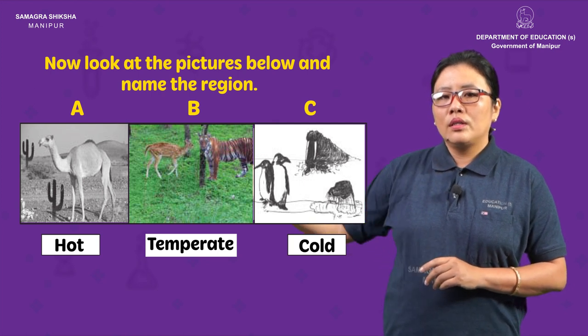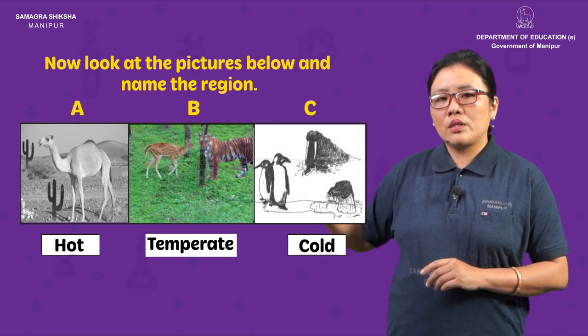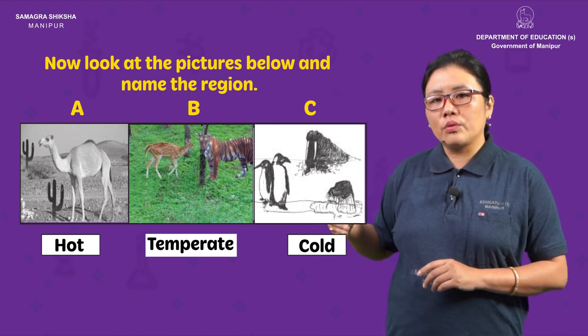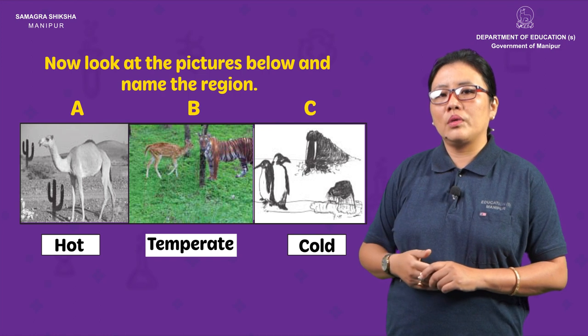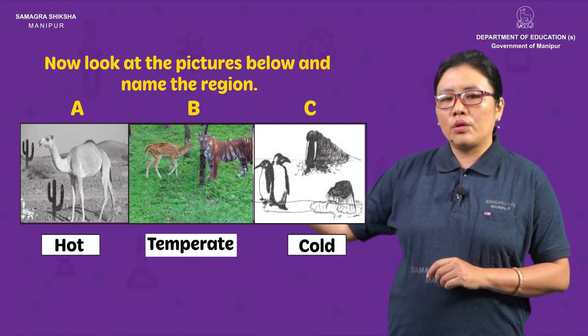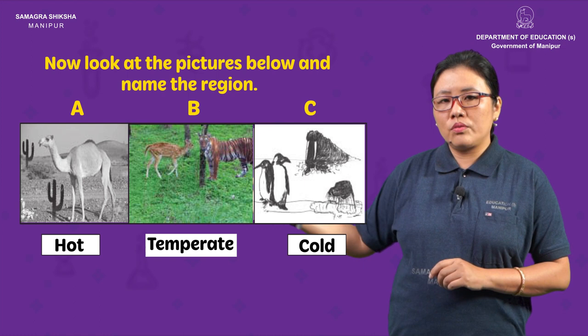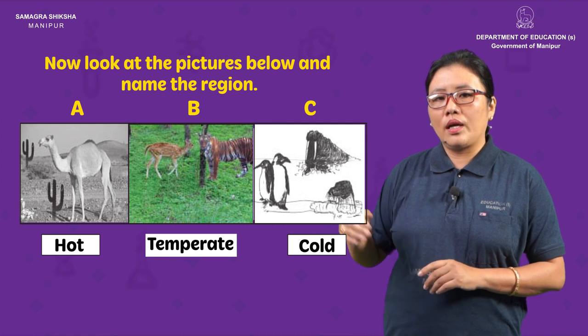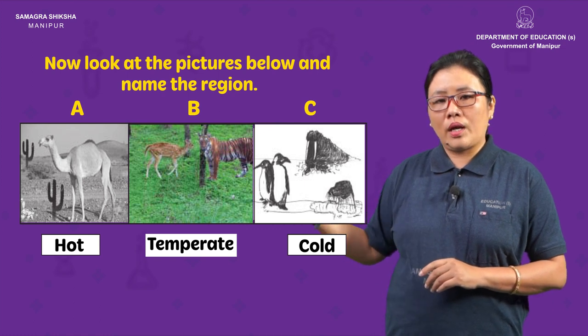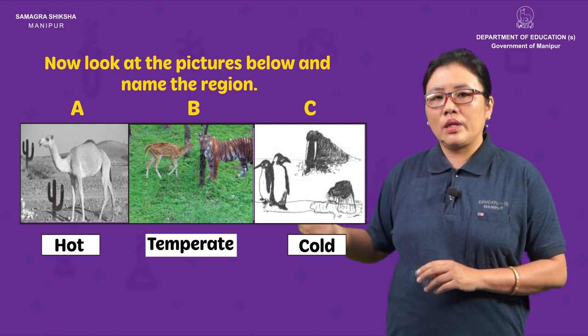In this picture, we have revealed the hot region, the cold region, and the temperate region, with the animals and plants that are found in each.